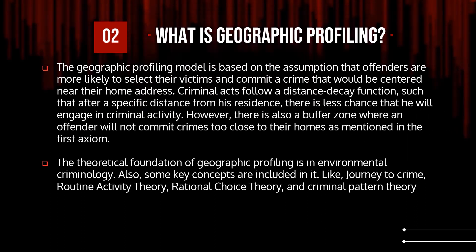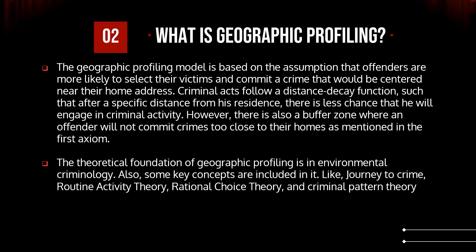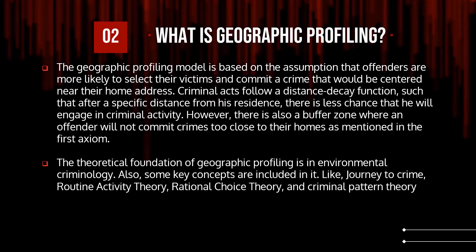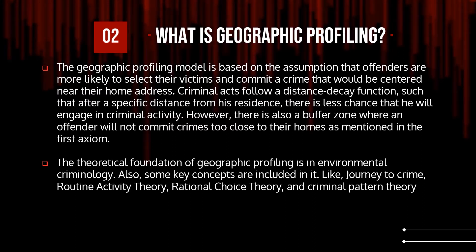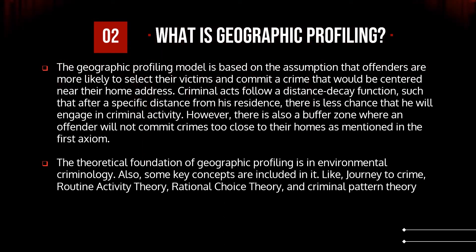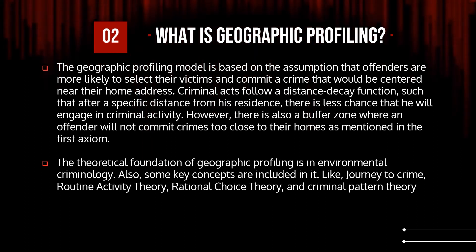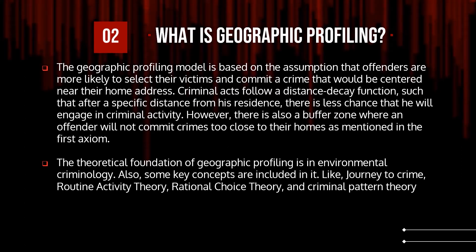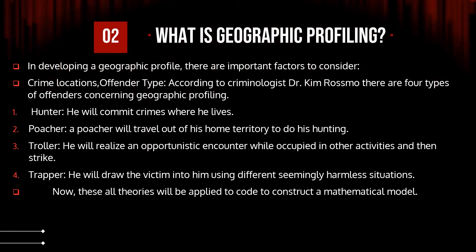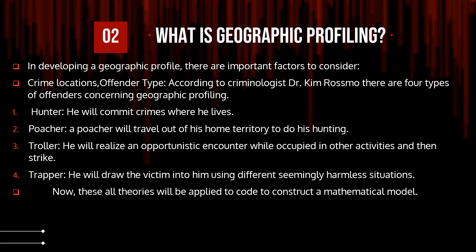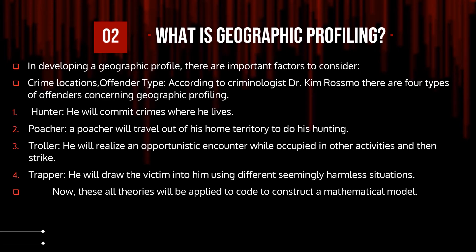The geographic profiling model is based on the assumption that offenders are more likely to select victims and commit crimes centered near their home address. Criminal acts follow a distance decay function — after a specific distance from the residence, there is less chance of criminal activity. However, there is also a buffer zone where an offender will not commit crimes too close to their home. According to Dr. Kim Rossmo, there are four types of offenders: hunter, poacher, troller, and trapper.